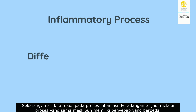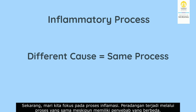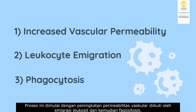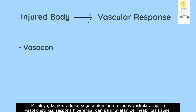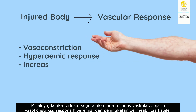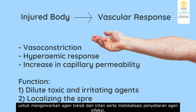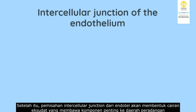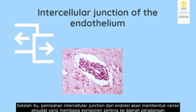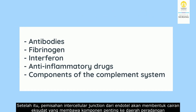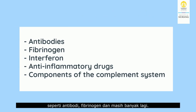Now let's focus on the inflammatory process. Inflammation occurs through the same process regardless of different causes. This process begins with increased vascular permeability, followed by leukocyte emigration and then phagocytosis. For example, when we injure ourselves, there will be a vascular response such as vasoconstriction, a hyperemic response, and an increase in capillary permeability to dilute toxic and irritating agents and localize the spread of infectious agents. After that, separation of the intercellular junctions of the endothelium will allow exudate carrying important components — like antibodies, fibrinogen, and more — to reach the area of inflammation.